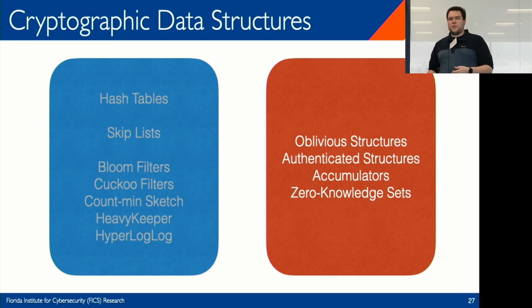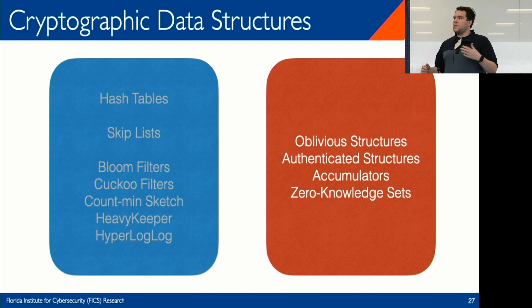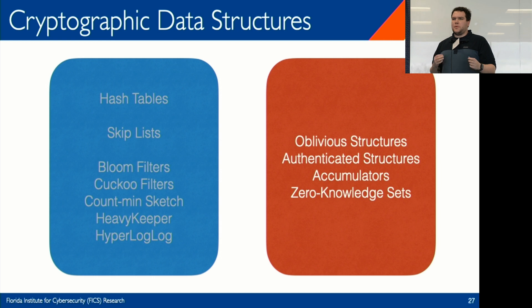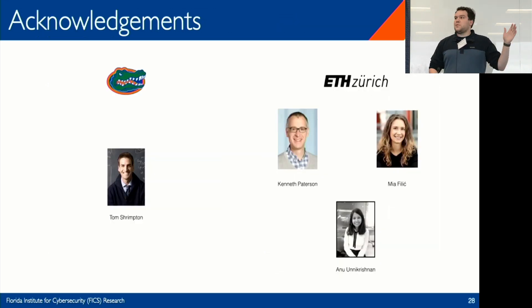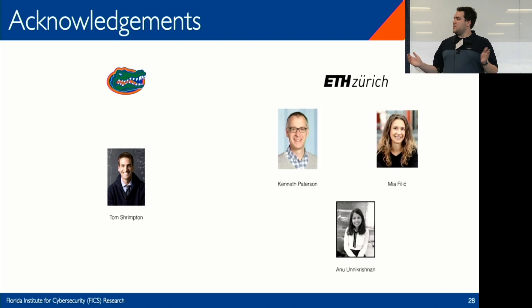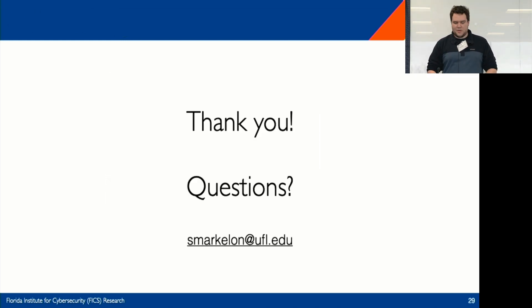Zero-knowledge sets have existed in the theoretical cryptography literature for about two decades. Now they're coming into fruition because of key transparency systems and verifiable key directories. The way they're presented in the literature is a bit of a mismatch — presented as a two-prover, one-verifier protocol, whereas in verifiable key directory systems the parties involved are different. Thank you to my co-authors and colleagues: advisor Tom, and collaborators from ETH — Kenny, Nia, and Anu.